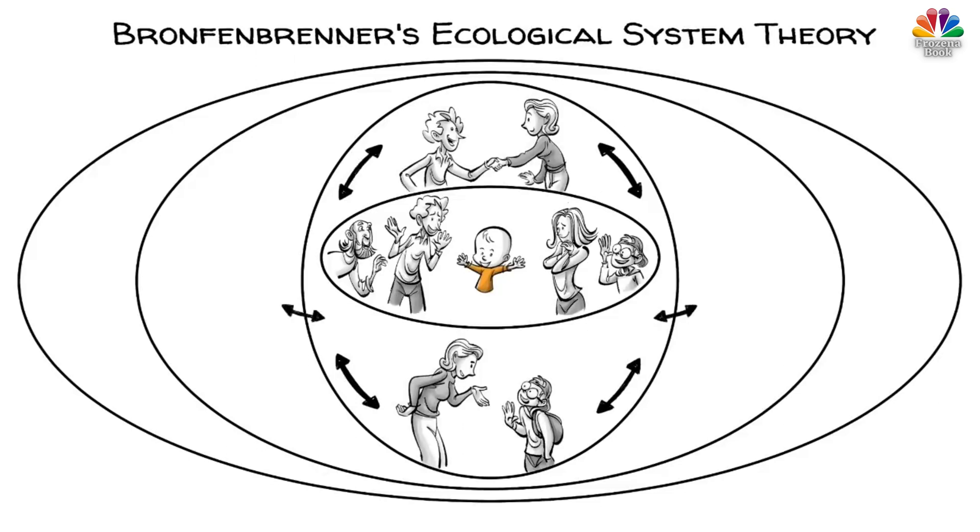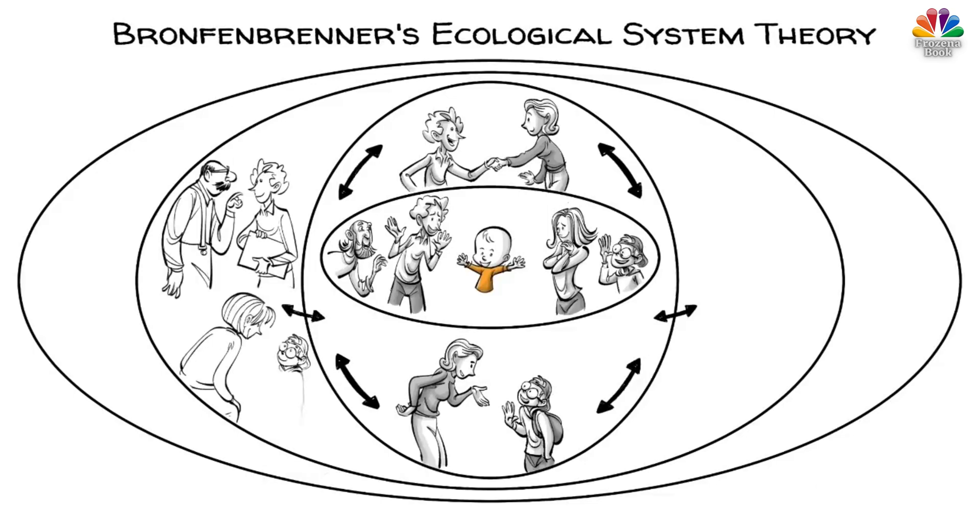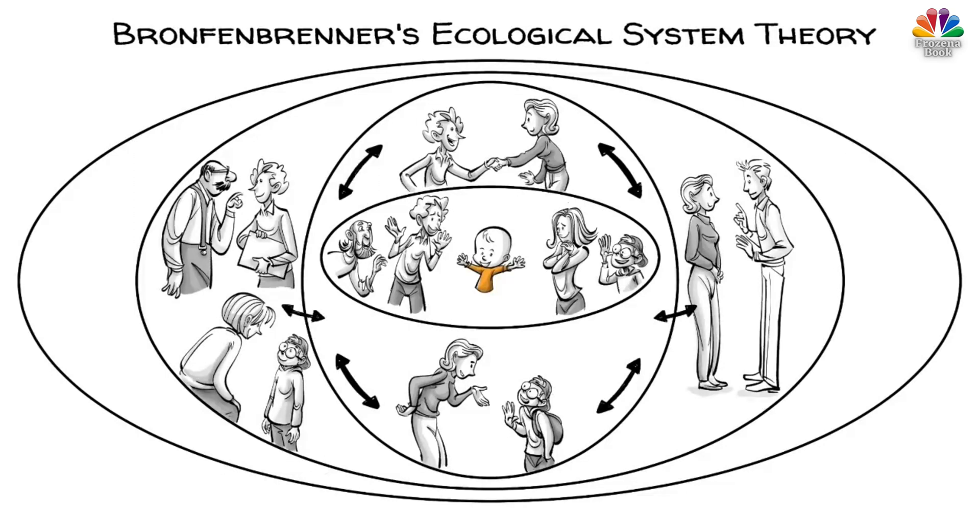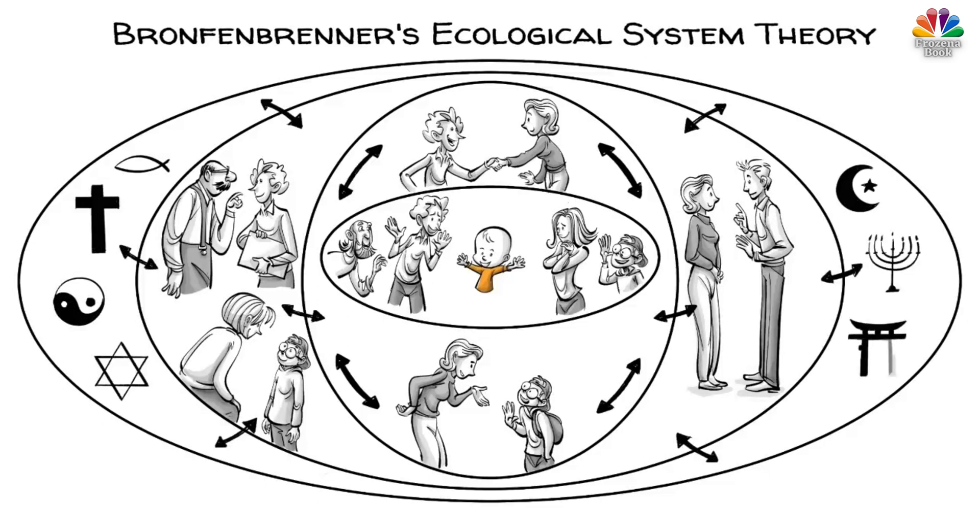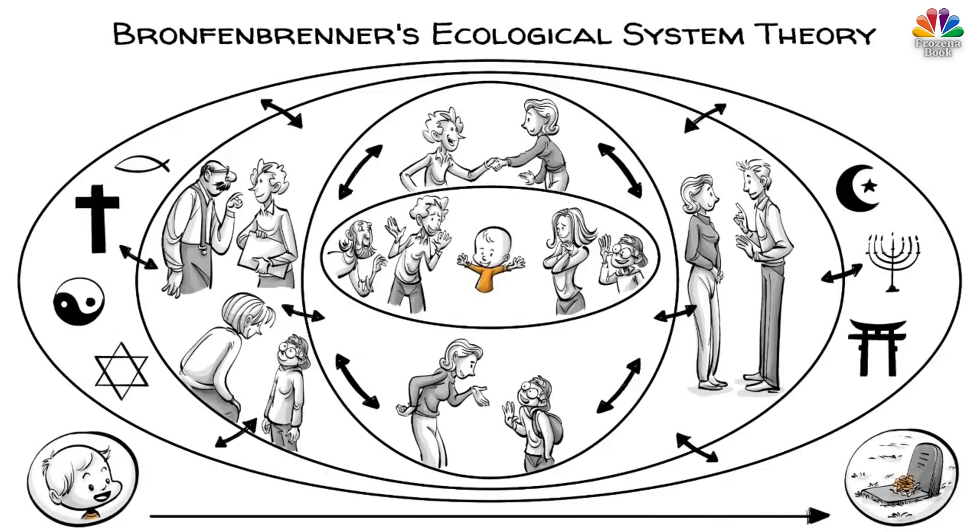Then there are links between social settings that do not directly involve the child, such as the father with his boss, the peers with their parents, and the teacher with the principal. Next is the overarching culture, religion, and social norms that influences all others. And lastly, there is time, which changes everything over the course of one's life.